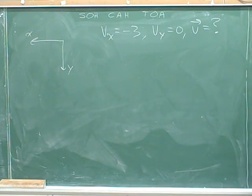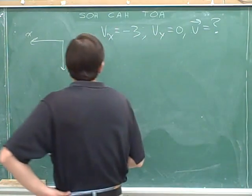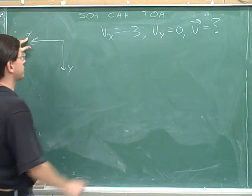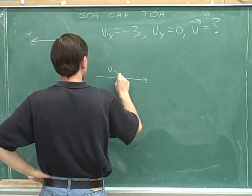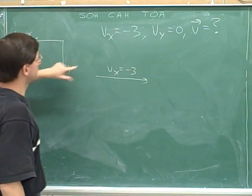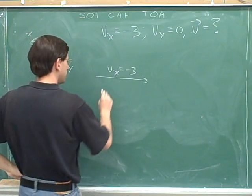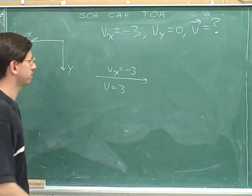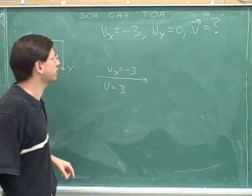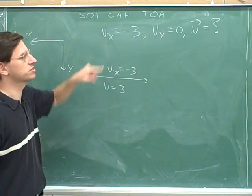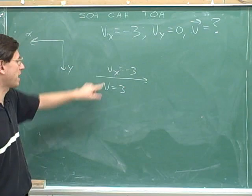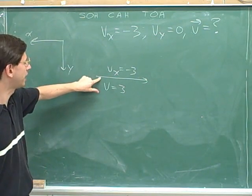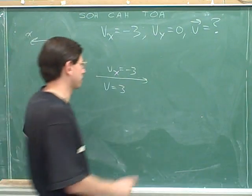Try this question. The positive x direction is left, but the x component is negative, so the x component is pointing to the right. If left is positive and the component is negative, it's pointing to the right. The overall vector also has a magnitude of 3 because there is no y component. If there is no y component, then the magnitude of the overall vector is the same as the magnitude of the x component. The same arrow indicates both the x component and the overall vector.